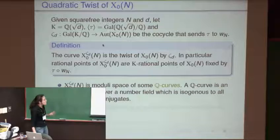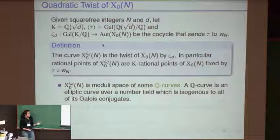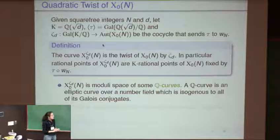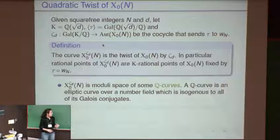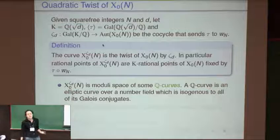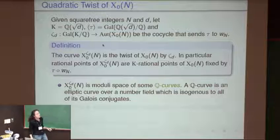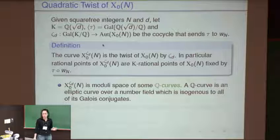This twisted curve is also a moduli space, and the rational points of this moduli space classify what are called Q-curves — a close relative of elliptic curves over Q. Q-curves are elliptic curves, but not defined over Q; they are defined over a number field. However, their isogeny class is invariant under the action of Galois. Since we usually study elliptic curves up to isogeny anyway, this is a natural generalization. Q-curves play the role of elliptic curves when solving twisted Fermat equations.